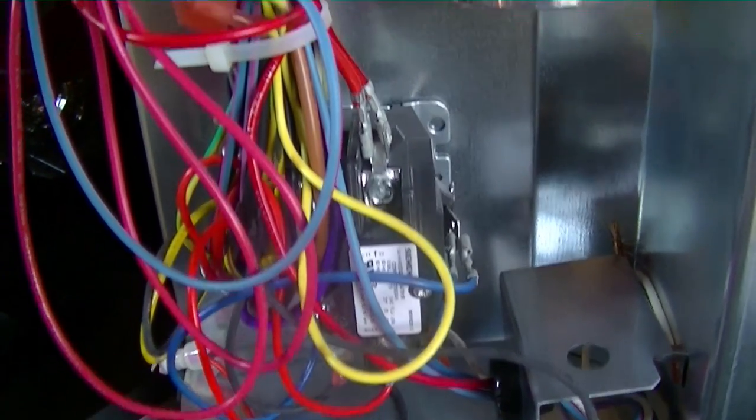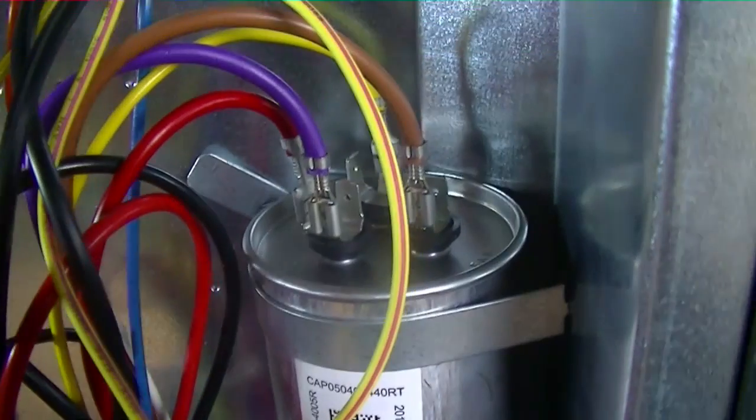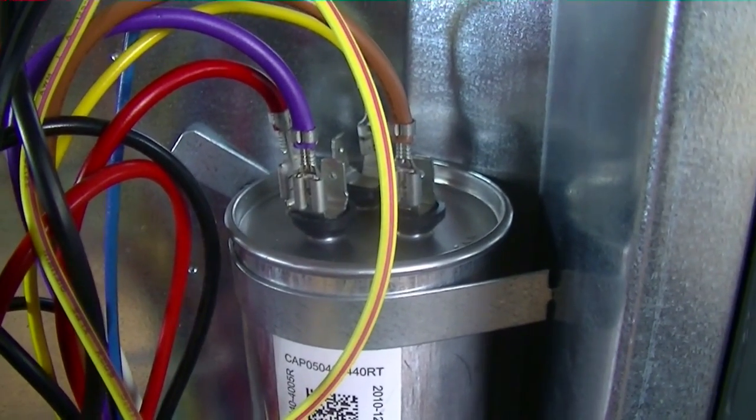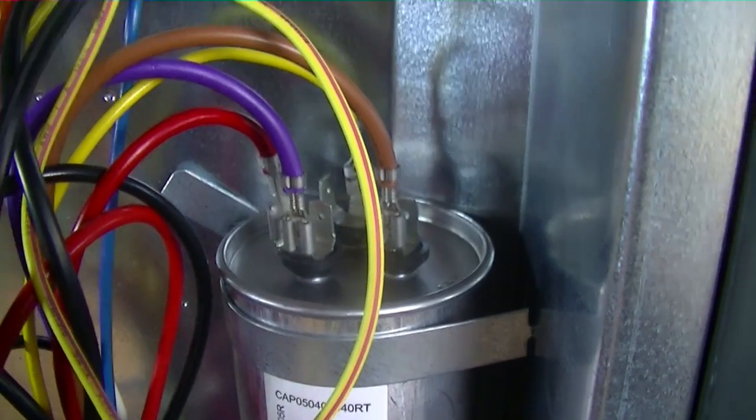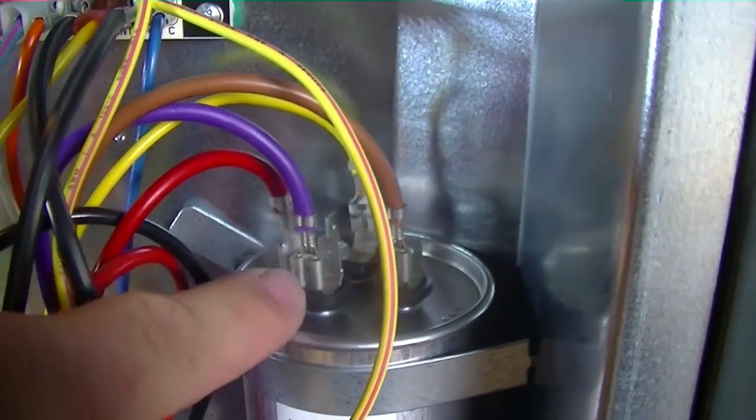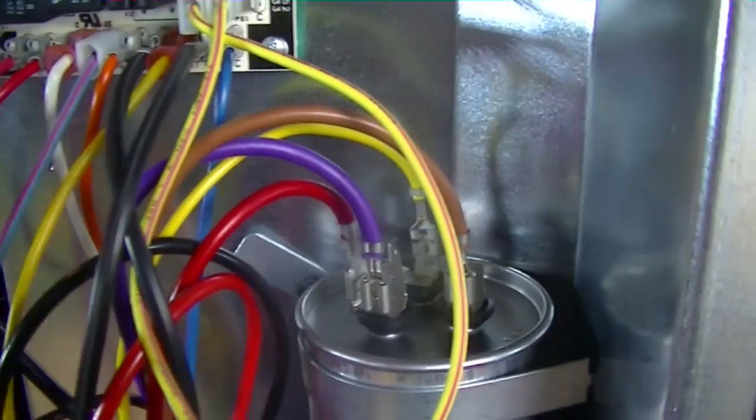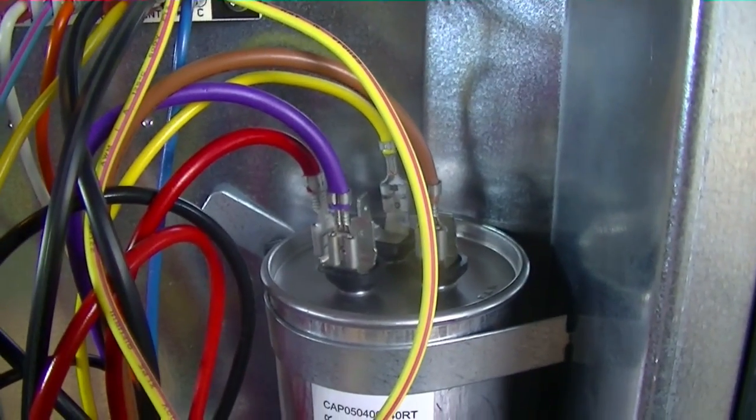The run wires will go to the common on the dual run capacitor. But we can only see two wires on that common terminal. Our purple goes to the fan motor. The purple carries one half of the voltage, 120 volts.